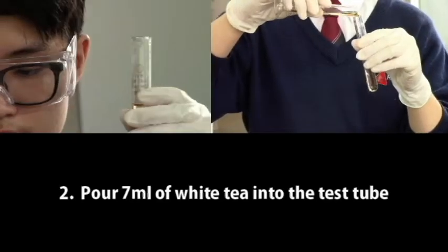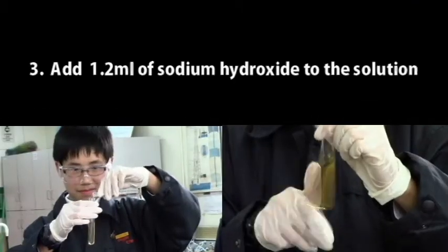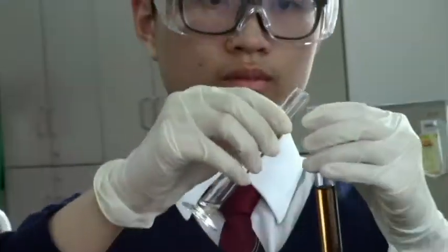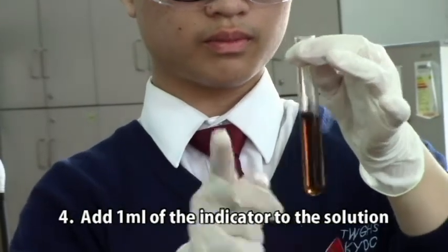Pour 7 milliliters of white tea into a test tube. Add 1.2 milliliters of 1 molar sodium hydroxide to adjust the pH value. Add 1 milliliter of the indicator obtained from the first step to the mixture obtained in the second step. Stir well.